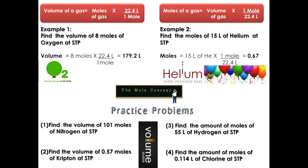Let's apply this concept to these two examples. Find the volume of 8 moles of oxygen at STP. 8 moles, multiply moles at the bottom, so we can cancel them out, and 22.4 liters on top. By multiplying them, that will give us 179.2 liters.